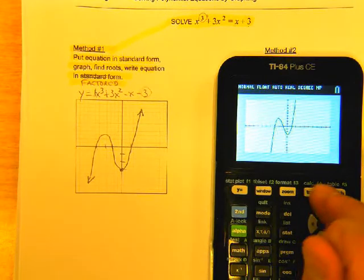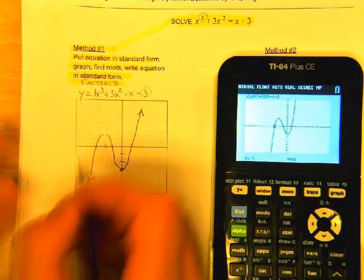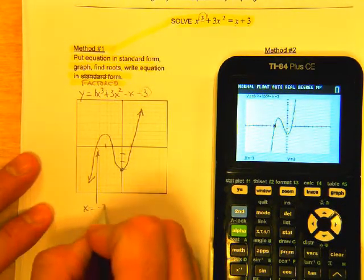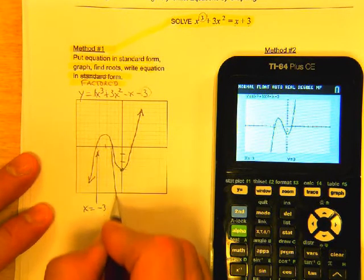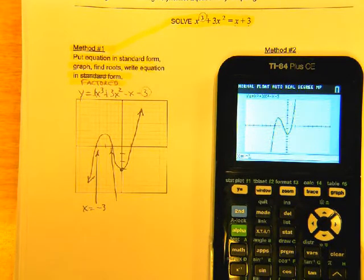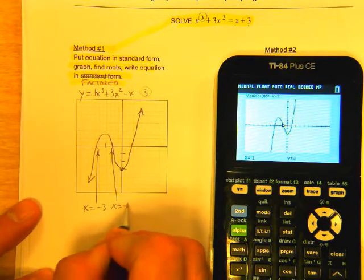I'm going to press my trace button, and I'm going to put in negative 3, enter. I get y equals 0. So there's one of them. x equals negative 3. That one looks like negative 1. So trace, negative 1, enter. y is 0. So we know that's a root.